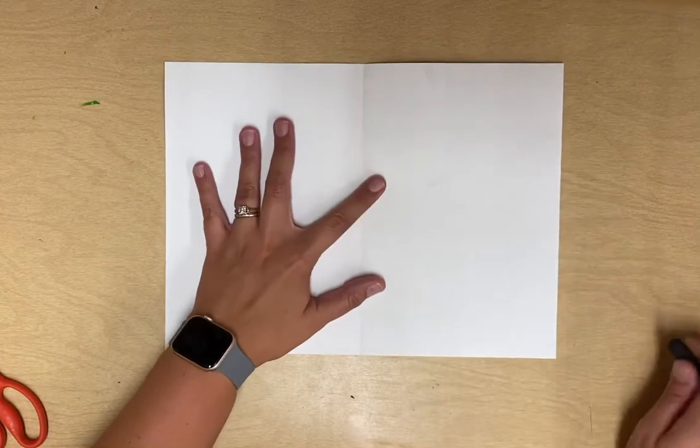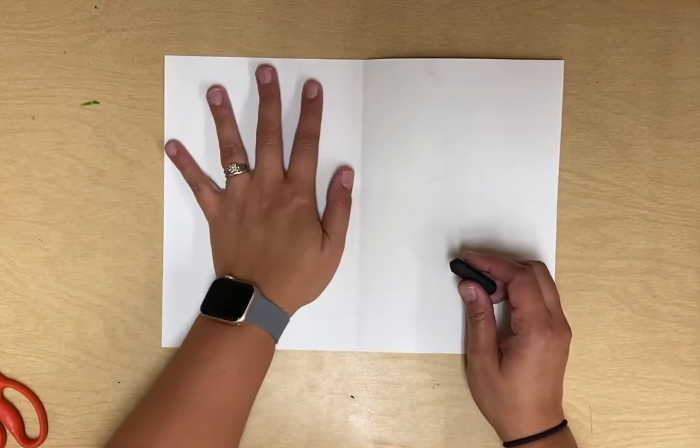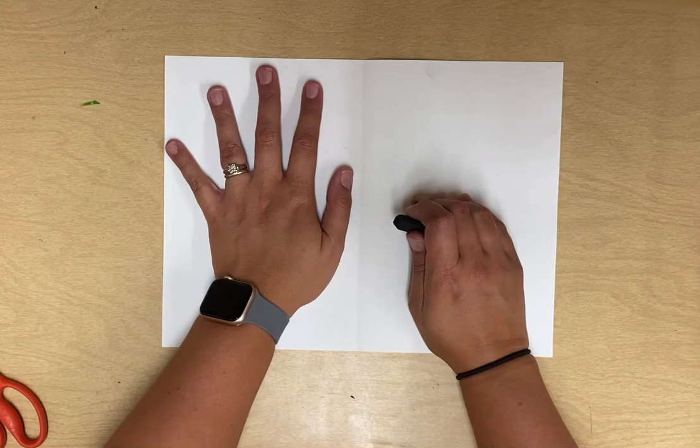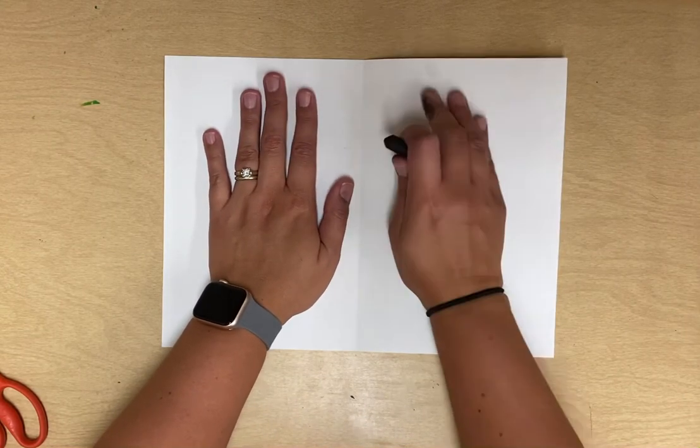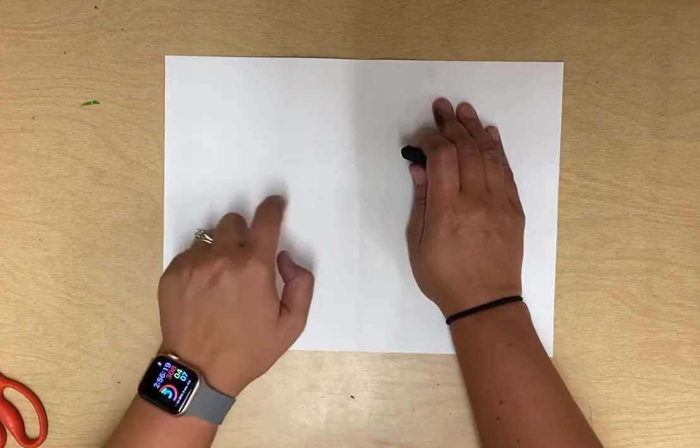Now we are not drawing on one side of the paper, we are only drawing on the right side. Just put your hand on one side. If you're left-handed then you can draw on this side.